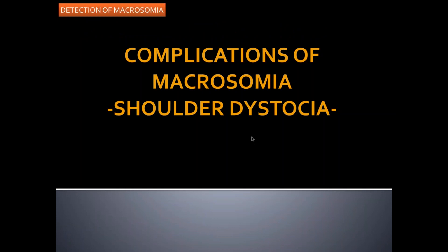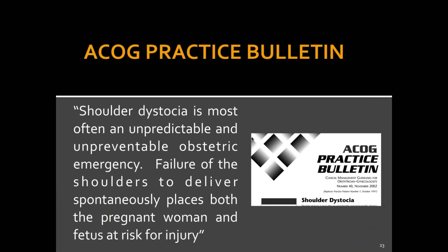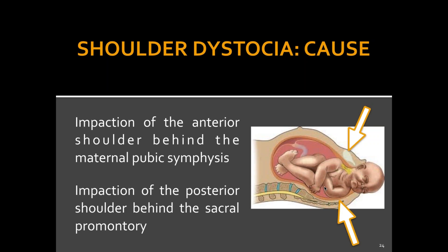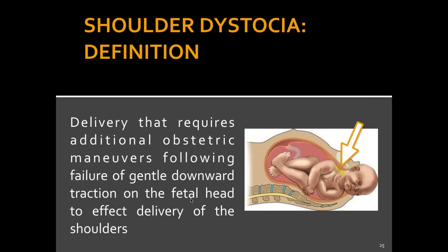Now let's look at the complications of macrosomia and shoulder dystocia. The American College of OBGYN states shoulder dystocia is most often an unpredictable and unpreventable obstetric emergency. Failure of the shoulders to deliver spontaneously places both the pregnant woman and the fetus at risk for injury. The cause is impaction of the anterior shoulder behind the maternal pubic symphysis — the head delivers and the shoulder gets stuck. It can also occur at the posterior shoulder against the sacral promontory.